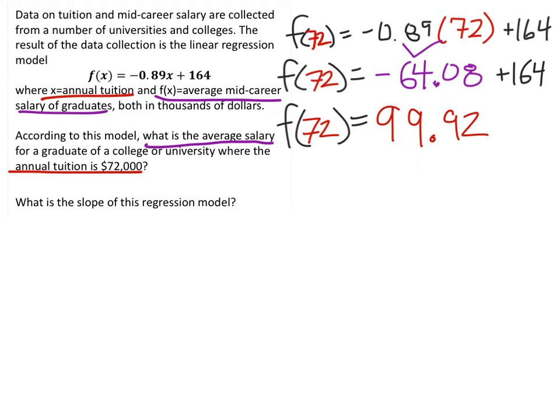and hopefully guys, I think I missed this, but the 72 was 72,000, and it told us up here, right here, that both are in thousands of dollars. So that's why it's a 72 and not a 72,000. So that means also that this is in thousands.